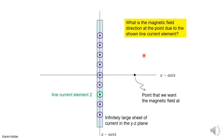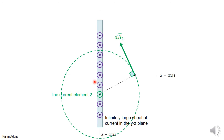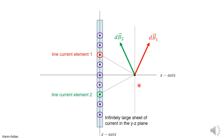Consider another thin line exactly the same distance away on the other side of the x-axis. Its magnetic field also goes around in circles and is perpendicular to that line, making an angle in space. When you add both contributions, the x-components cancel and the z-components in the negative-z direction add. So the total magnetic field at this point points upward, and this is true for any pair of symmetric thin lines.